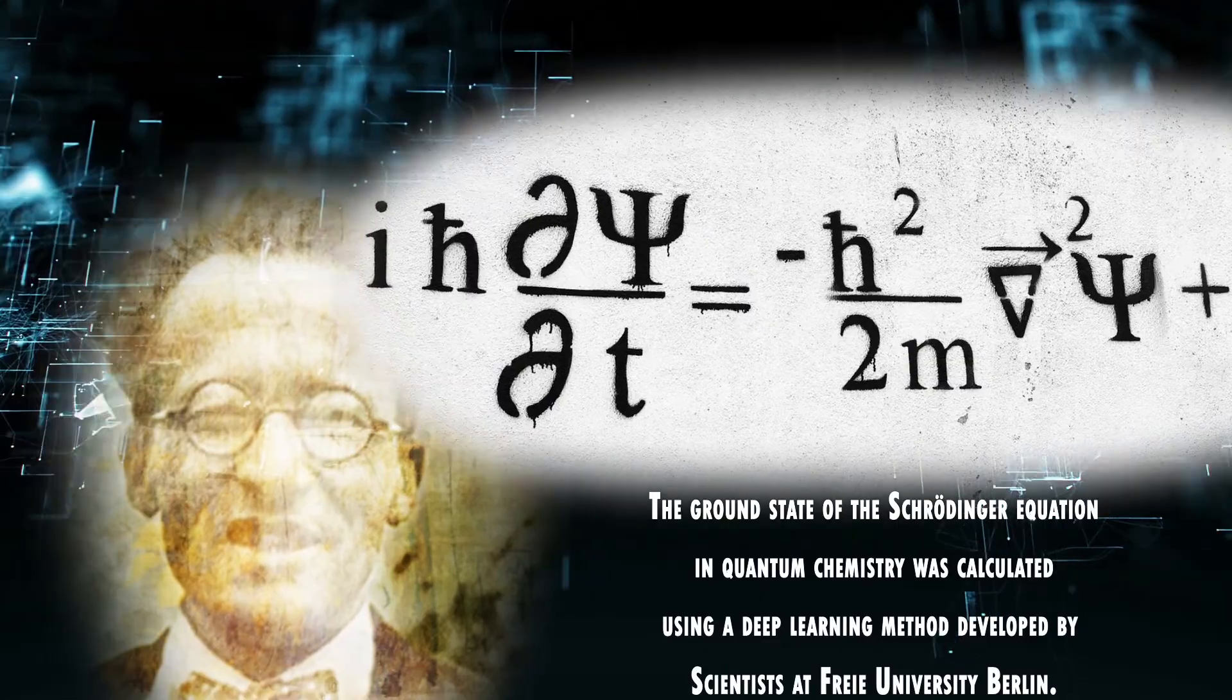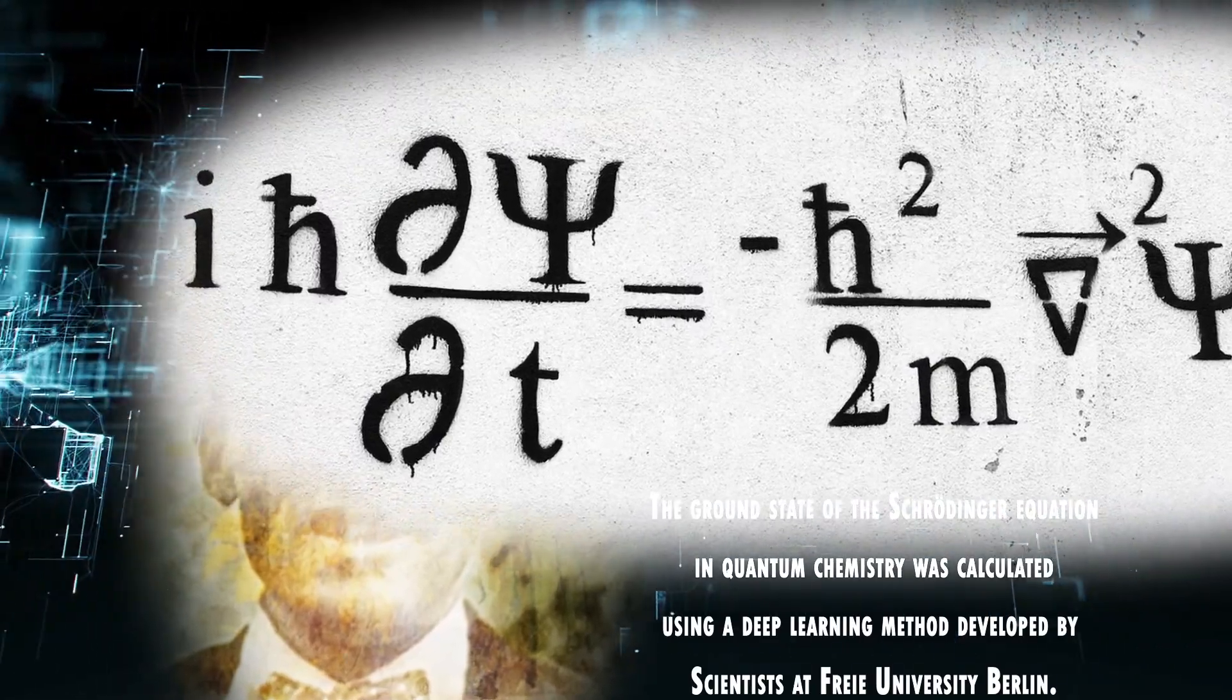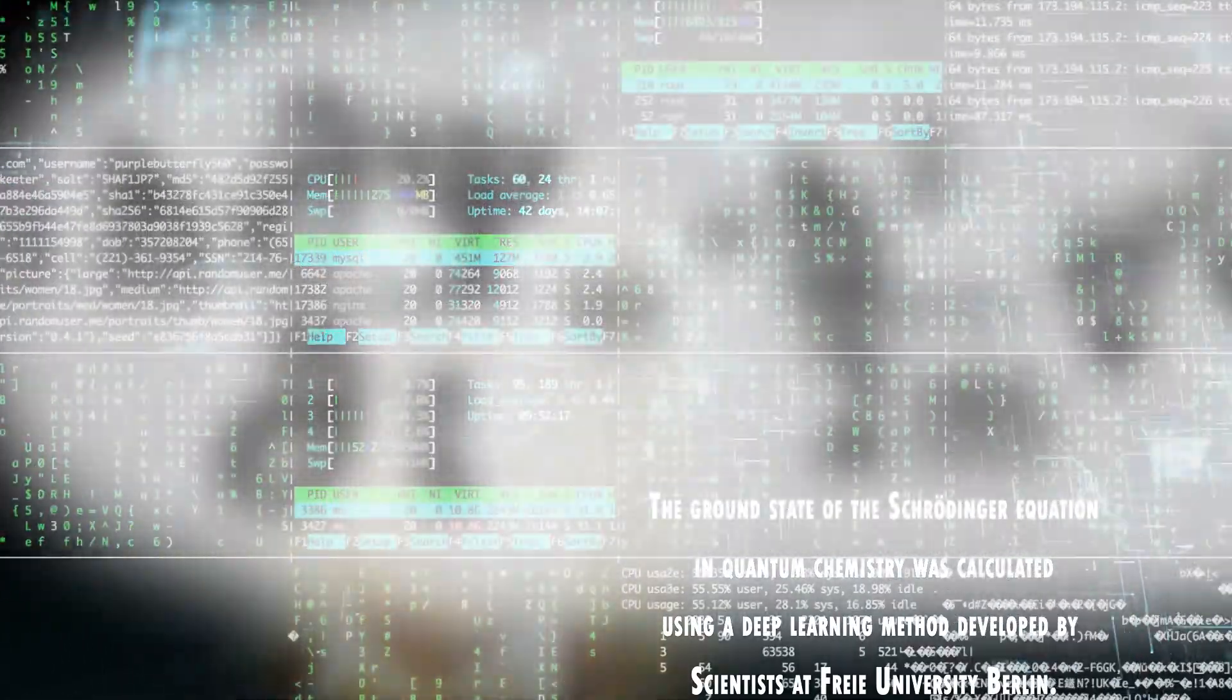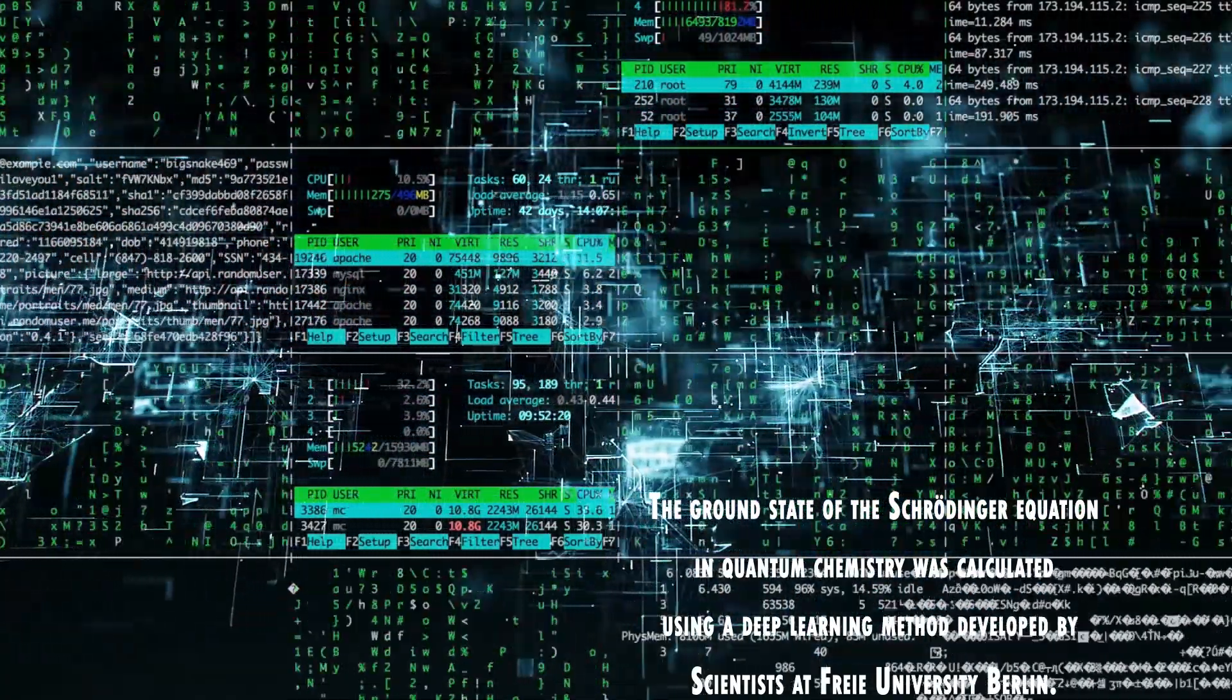The ground state of the Schrödinger equation in quantum chemistry was calculated using a deep learning method developed by scientists at Frey University Berlin.